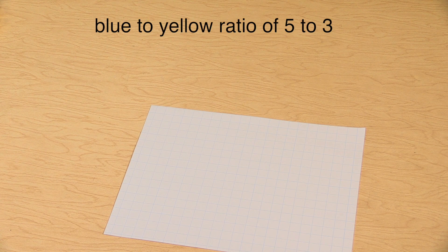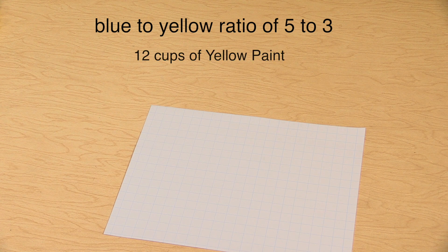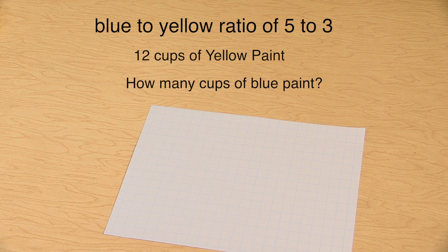The art teacher is mixing blue and yellow paint to make a gorgeous shade of green. She's mixing blue to yellow at a ratio of 5 to 3. If she uses 12 cups of yellow paint, how many cups of blue paint will she need?